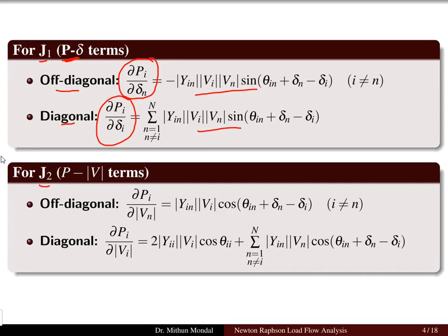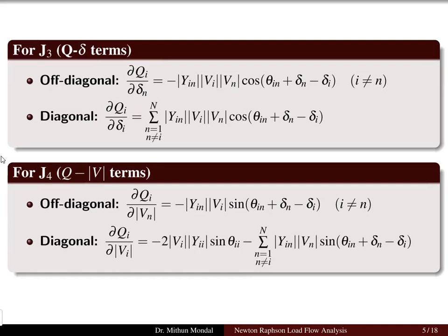Similarly for J2, which is the relation between power and voltage magnitude, the off-diagonal and diagonal terms are obtained accordingly. These expressions will be useful in solving the problem. Similarly, for J3 and J4 — the Q-delta and Q-voltage terms — the off-diagonal and diagonal terms are given by their respective expressions.